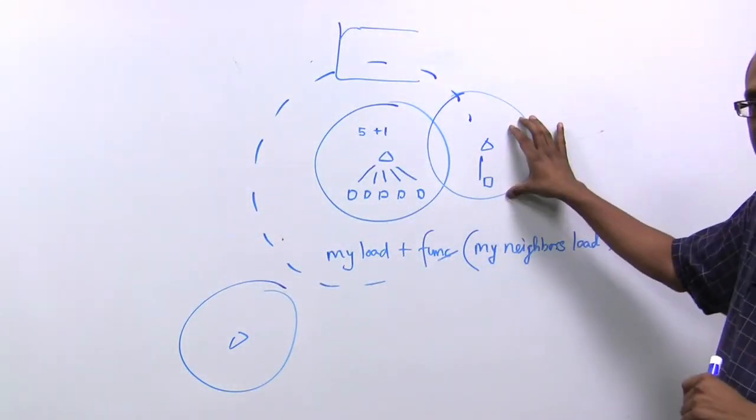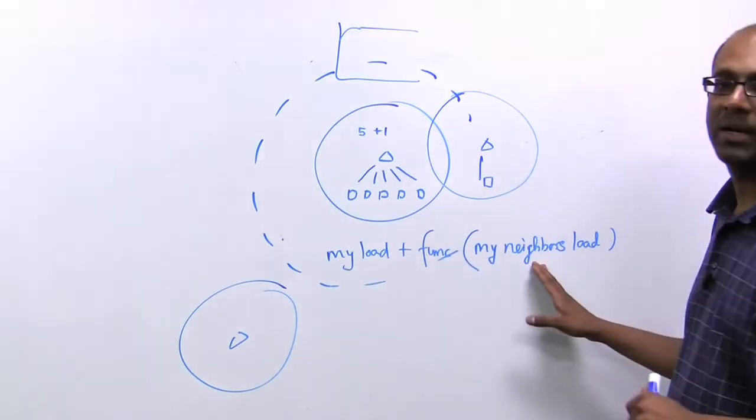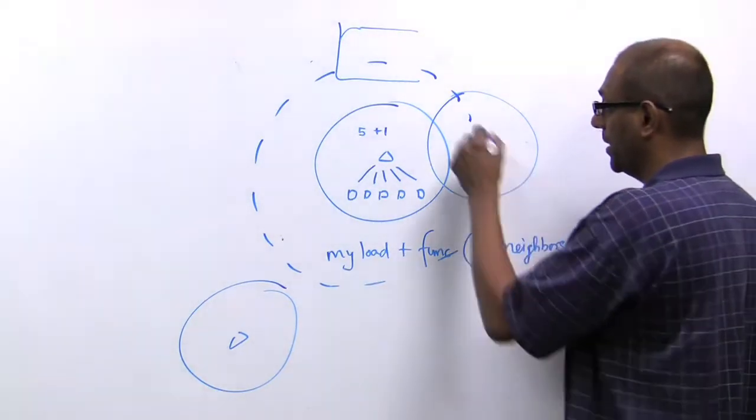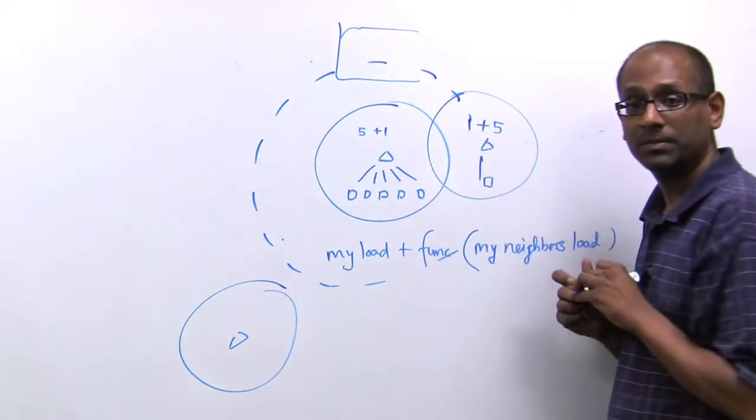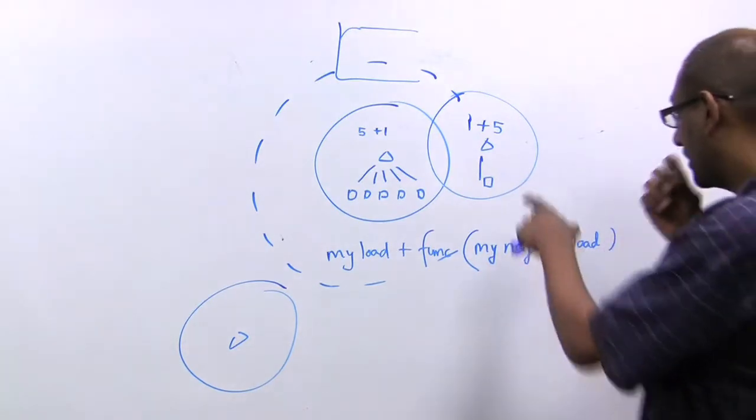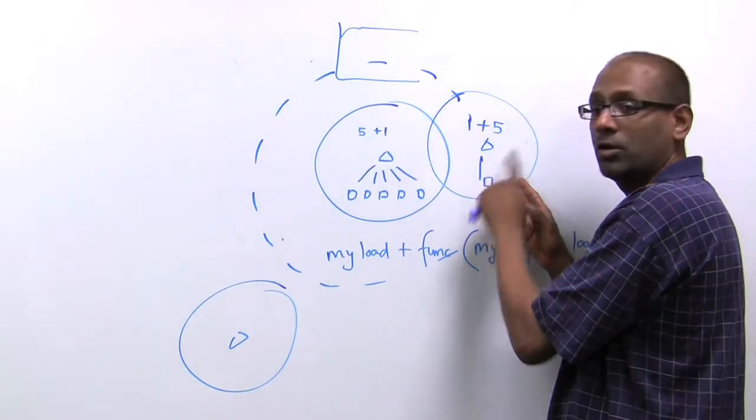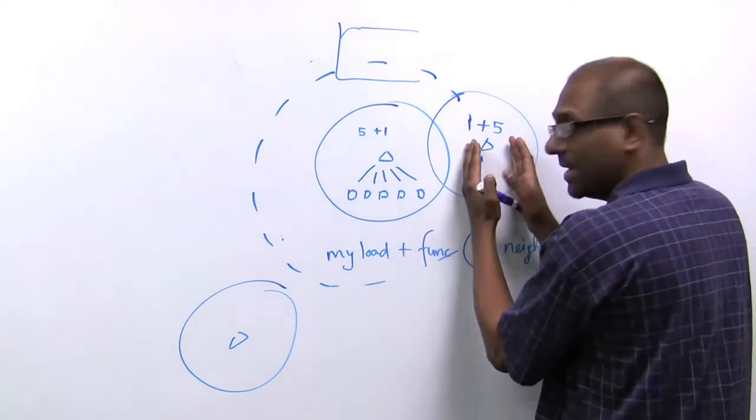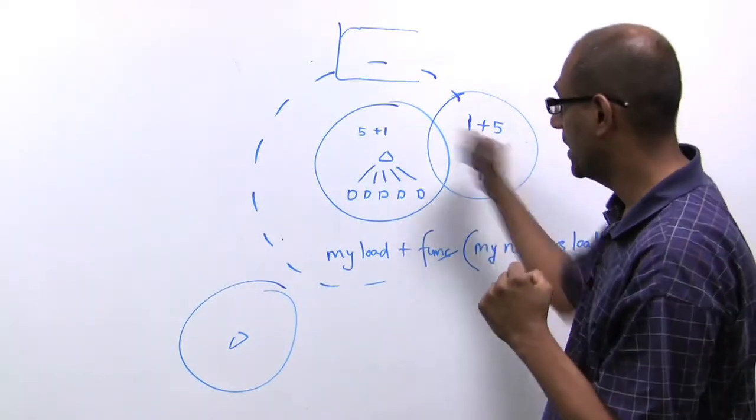In this simplistic case, it's five of mine plus one of my neighbors. And for this guy correspondingly, it's one of mine plus five of my neighbors. So notice that this access point behaves as though the load is six, not one. That ensures that this AP does not pick very aggressive values and kill this one.